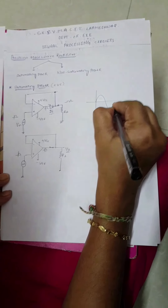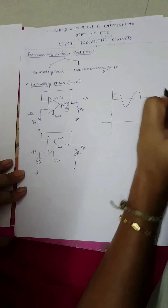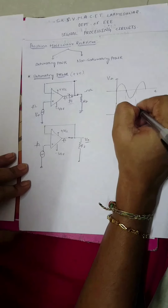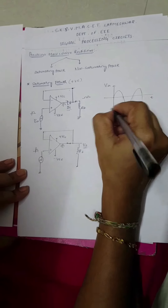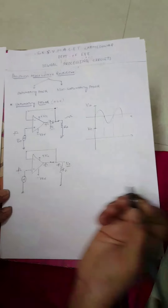For positive half cycle, the diode is forward biased and acts as short circuit, so the output is available at the output side. Drawing the waveform: considering one sinusoidal wave as input Vin, for the positive half cycle we get positive half cycle as the output. So for positive half cycle, the output is positive.